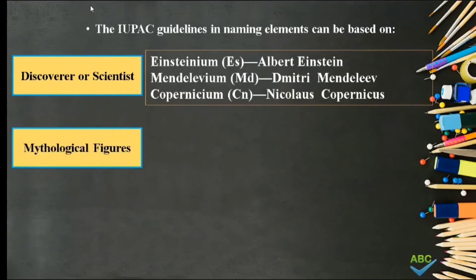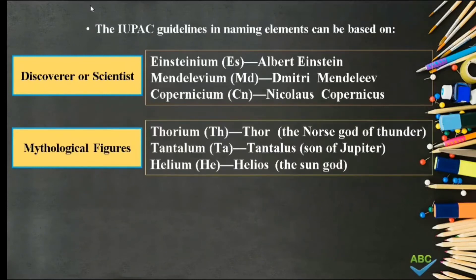Number 2. Mythological figures. Such as Thorium, named after Thor, the Norse God of Thunder. Tantalum, named after King Tantalus of Greek mythology, the son of Jupiter. And Helium, named after Helios, the Sun God.